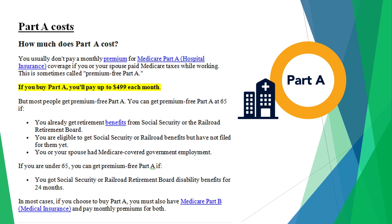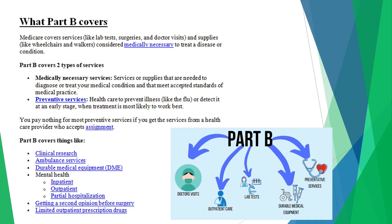If you are retired from Railroad Benefits, Social Security, or you or your spouse have covered government employment, Part A is free. If you are under 65 and receiving Social Security and Railroad Retirement Benefits, on your 25th month of having those benefits, you are then entitled to your Medicare — no questions asked. Part B, along with Part A, makes up your original Medicare.